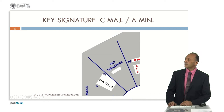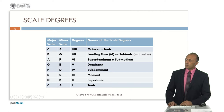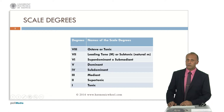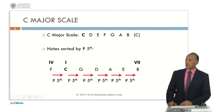These two keys have no accidentals in their key signature. We will assign a Roman numeral to every note in both scales, and we will call them, as we can see in this table: tonic, supertonic, mediant, subdominant, dominant, superdominant or submediant, leading tone in the case of a major scale or subtonic in the case of a natural minor scale. The last degree is the octave or tonic. We will use the same names for every scale.